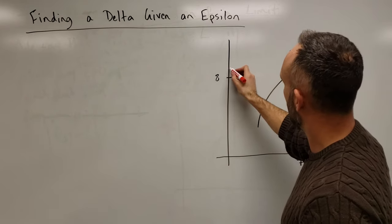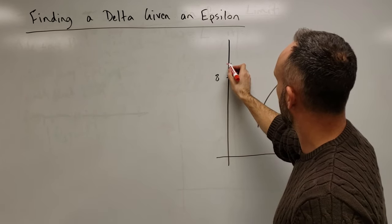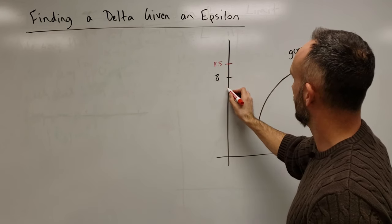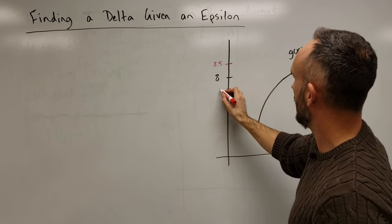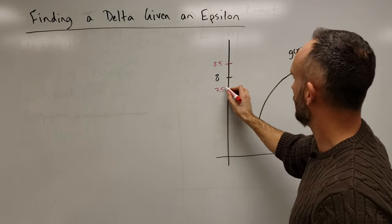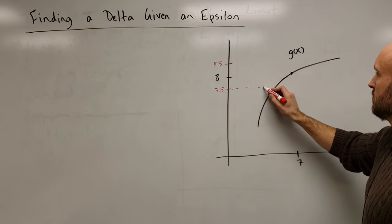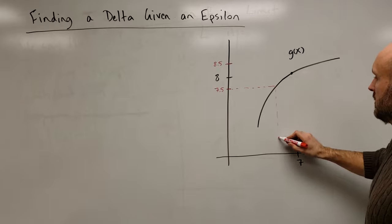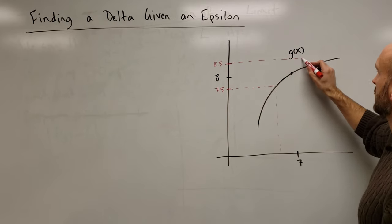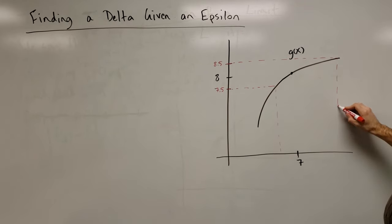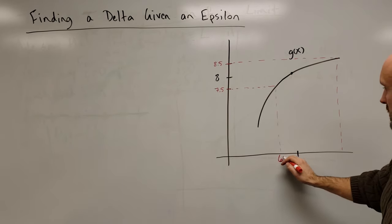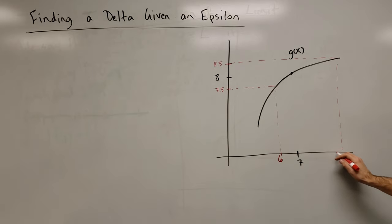And then we're going to trace out some values here on this graph. Let's say that up here, we have 8.5, and down here we have 7.5. And when we trace those back to the x-axis, let's say that this is 6, and this is 9.5.